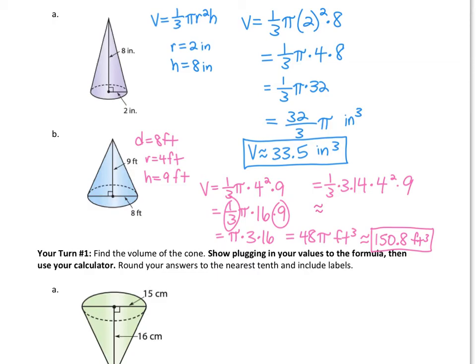Using 3.14 as pi instead: type one-third in parentheses, times 3.14, times 4 squared (or 16), times 9. A good tip is to do one divided by three, hit enter, then multiply by the rest so the calculator carries the repeating decimal. With 3.14 you get approximately 150.72, which rounds to 150.7 feet cubed — slightly off from 150.8. As I've mentioned, the bigger the numbers multiplied by pi, the more the answer differs. Either approach is acceptable; just show clearly whether you're using 3.14 or actual pi so the expected answer is clear. And that's it for example one.